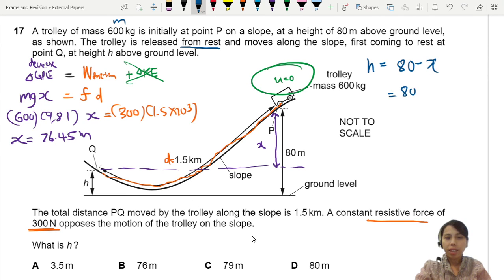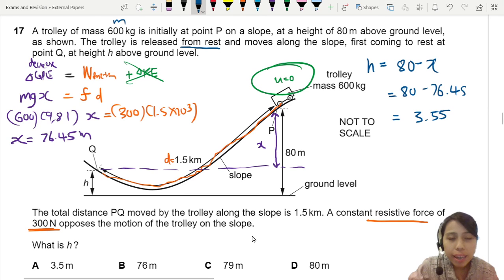So take 80 minus 76.45, and that will give us a very small value, about 3.55. I didn't keep many decimals, so my answer is about 3.5 to 3.6. But in this case they had 3.5 - a little bit off, but that's probably also due to the rounding. So I'm going to go with A - just a tiny little height above ground.